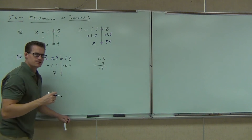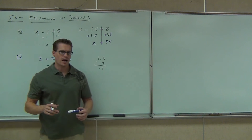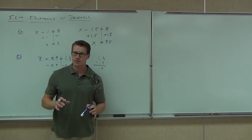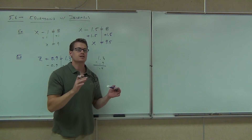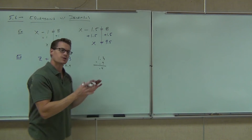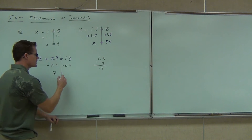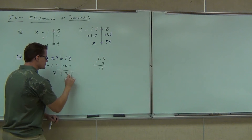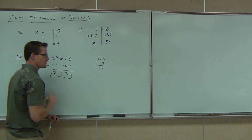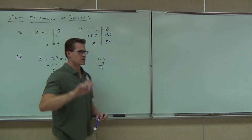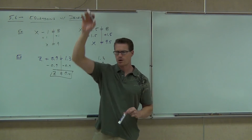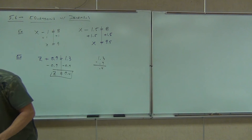Just make sure we're getting these things correct. You don't have a calculator to rely on for this test — next test, yes, absolutely, but not for this test. We get 0.4. That's our solution. Raise your hand if you feel okay with these two examples so far. Well, we're going to keep moving on.